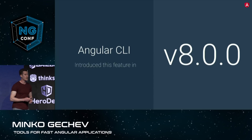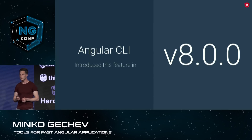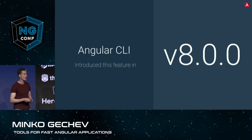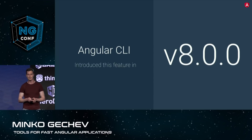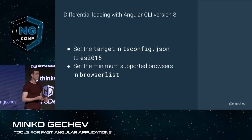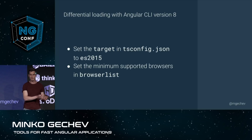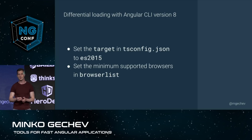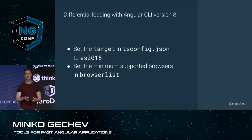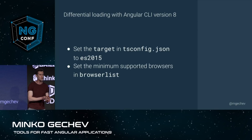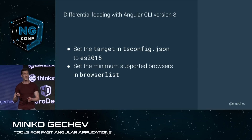We're going to introduce this as part of Angular CLI version 8. You can already experiment with this feature with our RC tool which is on NPM. Please give it a try and let us know how much we shrunk your bundles. You can control differential loading via two properties in the Angular CLI: set the target in tsconfig.json to ES2015, and set the minimum supported browsers in your browser list to make sure that you're shipping ES5 so your application is compatible with older browsers and also SEO friendly.